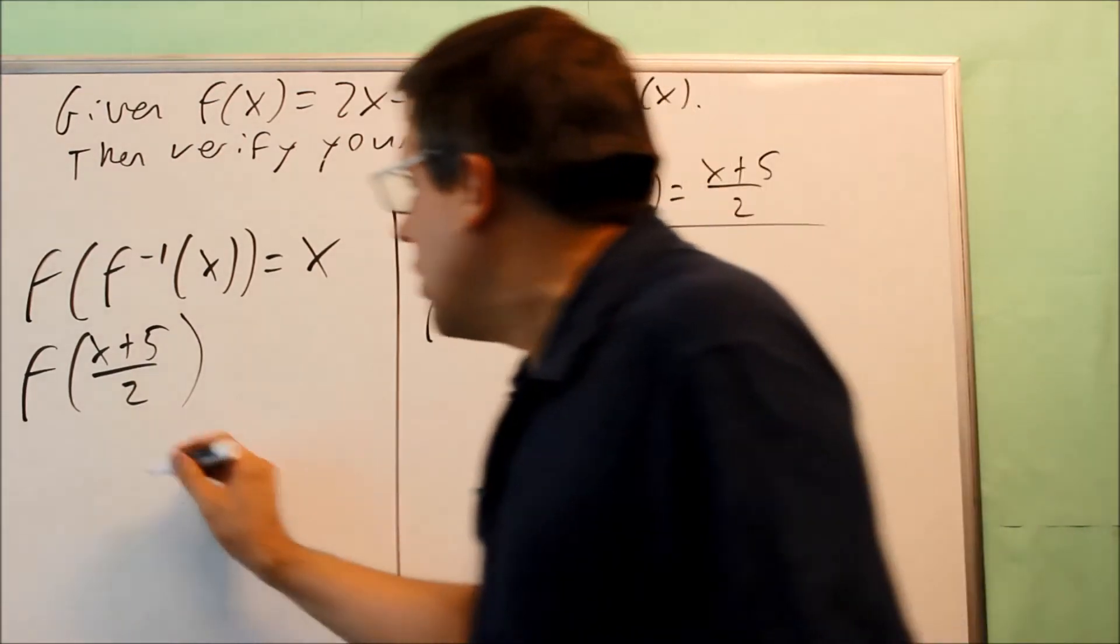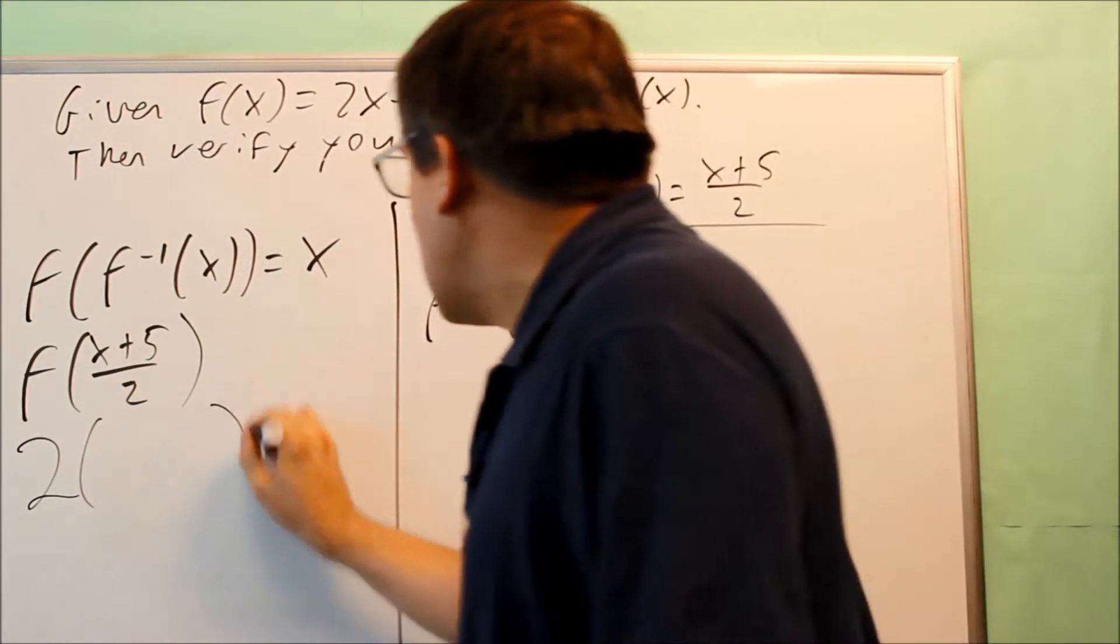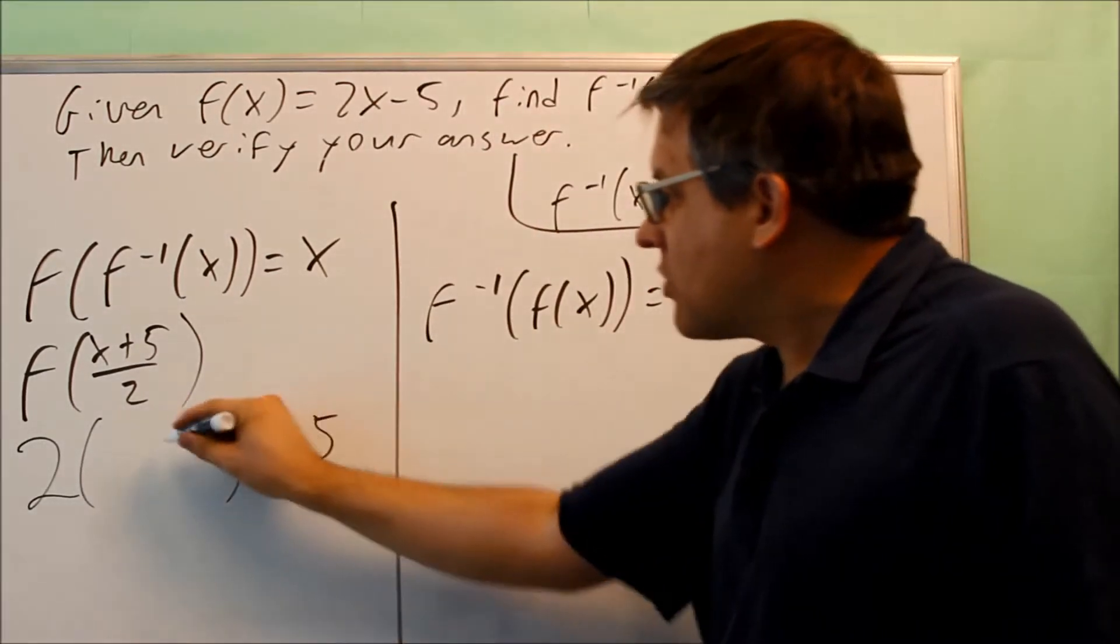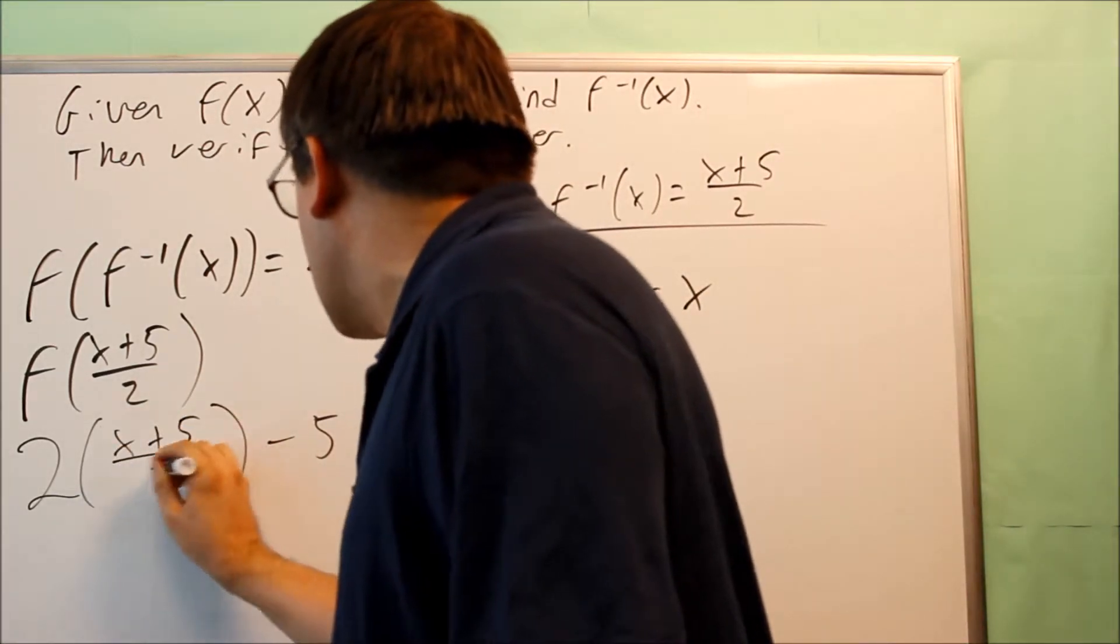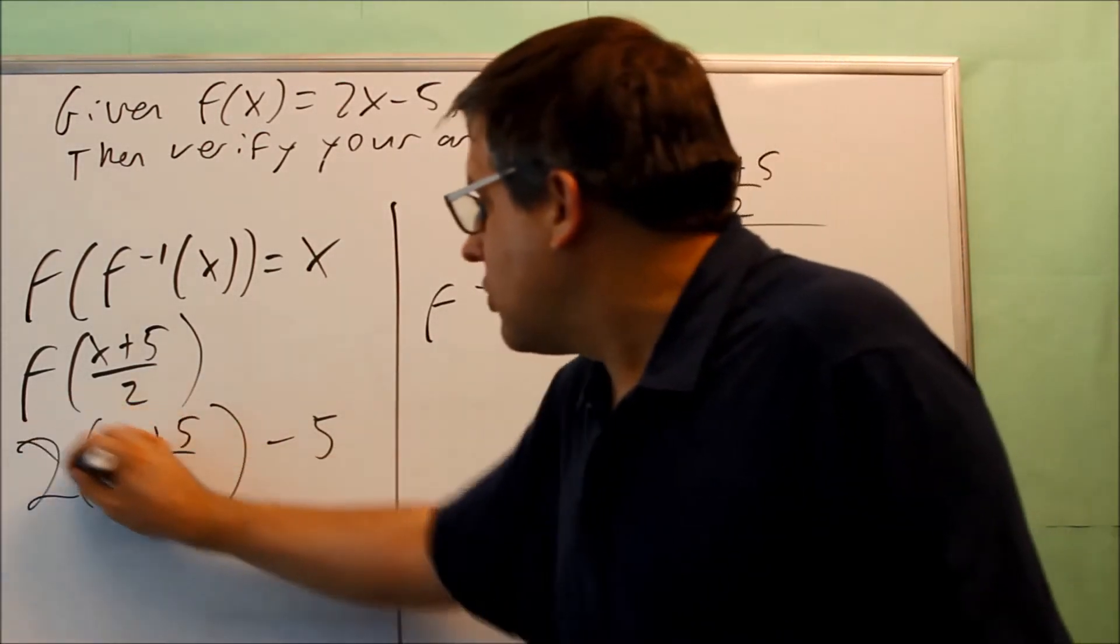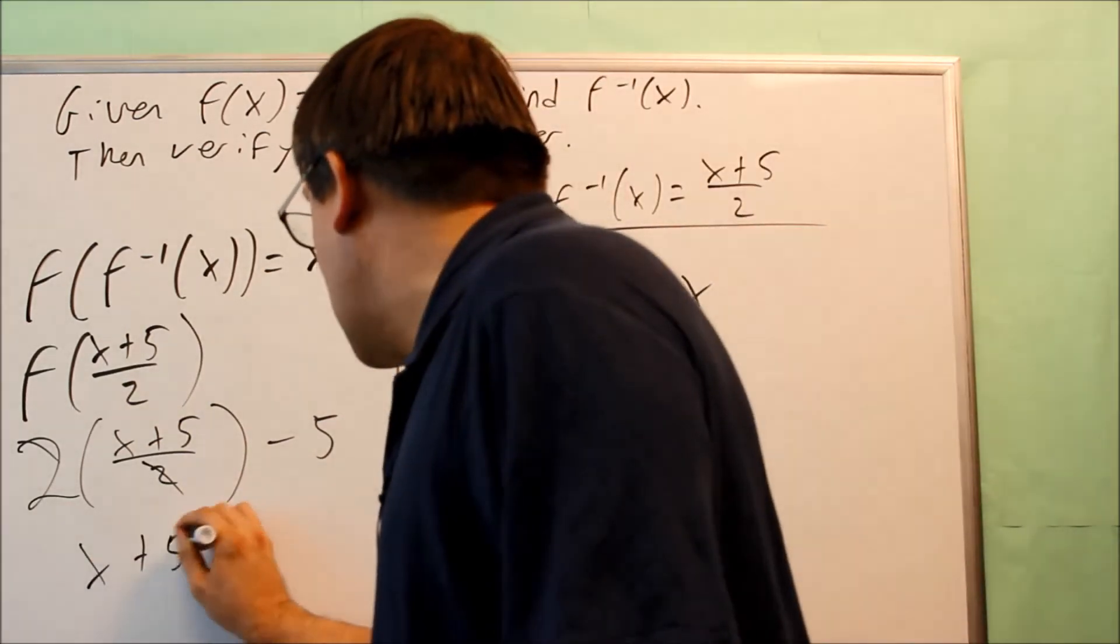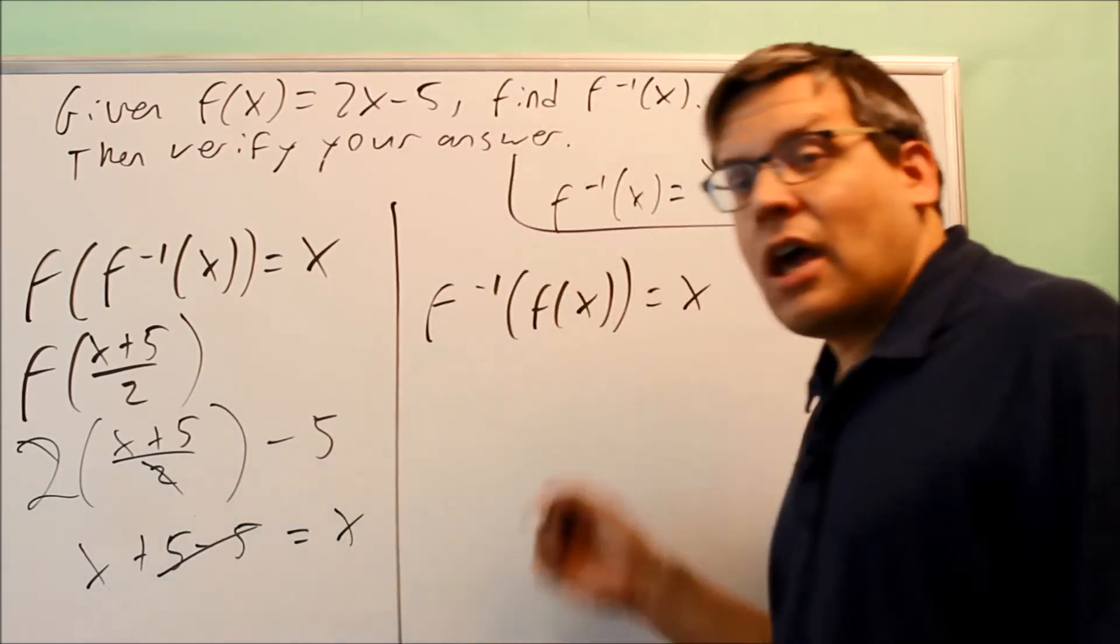So now when I do this one, I have the template from my original one is 2 times something, and then I have minus 5. Well, the x that would normally be here, I'm going to replace it with x plus 5 over 2, and then what happens is the 2 and this 2, those are both going to cancel, and I get x plus 5 minus 5. The 5's are going to cancel, and I get x.